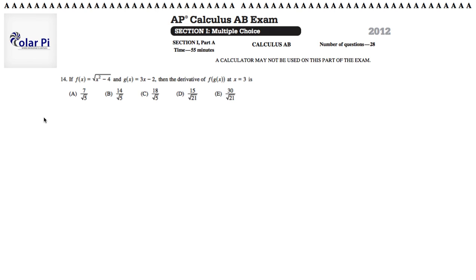Hi, welcome. In this video I'm going to go through problem 14. In problem 14, it says if f of x is equal to this and g of x is equal to this, then the derivative of the composition of f and g at x equals 3 is what?